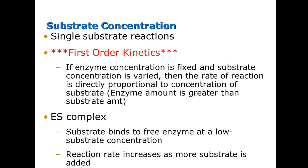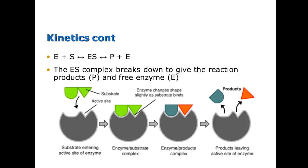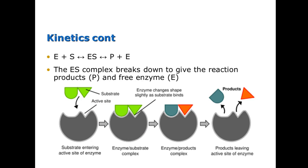The reaction rate continues to increase as more substrate is added. The enzyme has an active site. The substrate comes in, so the enzyme plus the substrate gives us an enzyme-substrate complex. As we move forward, the substrate and enzyme yield enzyme and products. At the end of the chemical reaction, we have the enzyme plus the products that are the result of the reaction.